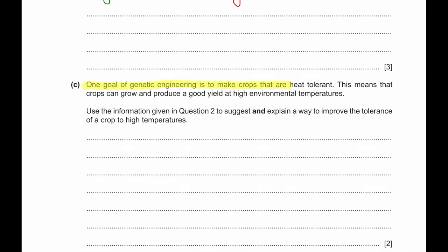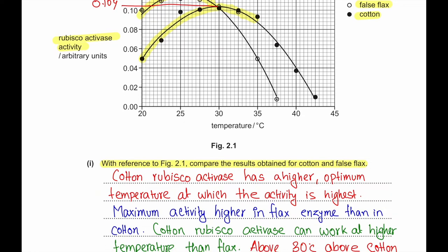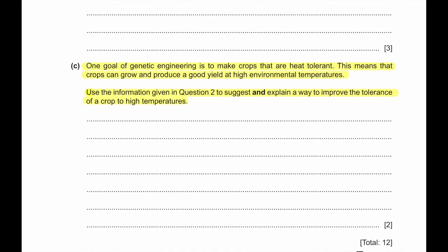One goal of genetic engineering is to make crops that are heat tolerant. This means that crops can grow and produce high yield at high environmental temperatures. Use the information in question number two to suggest and explain a way to improve tolerance of a crop to high temperature. The gene for Rubisco activase can be taken from the cotton and inserted into strawberry embryo, because we know strawberries are very sensitive to temperature. The Rubisco activase maintains the Rubisco action at high temperature, above 37.5 degrees Celsius to 42.5 degrees Celsius, which we can see from the previous page, and thereby maintain the rate of photosynthesis.